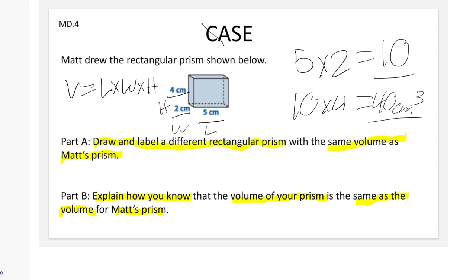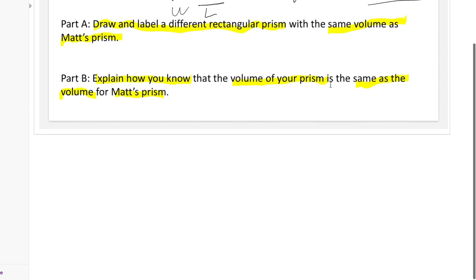Volume is the cubes inside of a prism, and that's why I labeled 40 cm cubed. The second chunk of Part A tells me to draw my own prism. So I'm going to go down here and I'm going to draw my own prism.